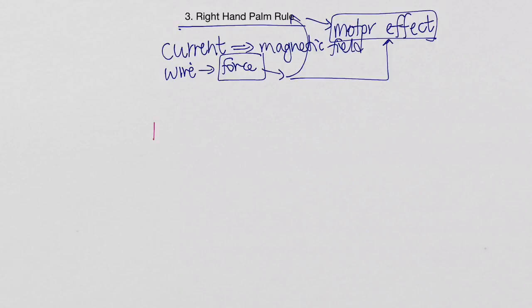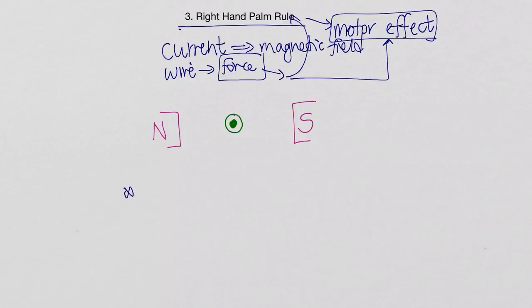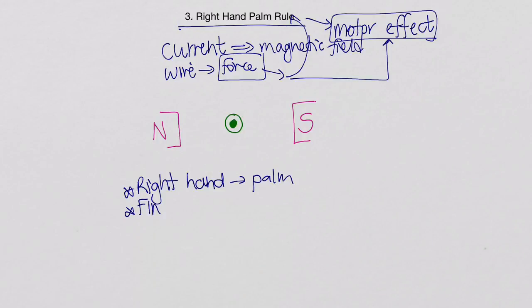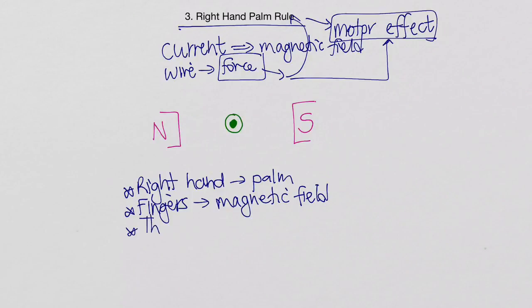Let's look at an example. We have a north pole of a magnet on the left, a south pole on the right, and a wire in the middle with a dot showing current coming towards us. With this rule, we use our right hand open and flat so we can see our palm. Your four fingers pressed together point in the direction of the magnetic field, and your thumb, stretched out at 90 degrees, points in the direction of the current. Your palm will then point in the direction of the force.